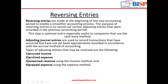Accrued income means the money that has been earned but has yet to be received. Here we pass the adjusting entry first, and in the next year we pass the reversing entry of the accrued income. Accountants debit an asset account for the accrued revenue, which is reversed when the exact amount of revenue is actually collected, thereby crediting the accrued revenue.